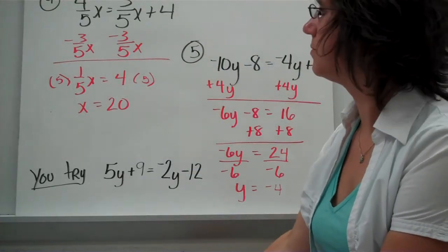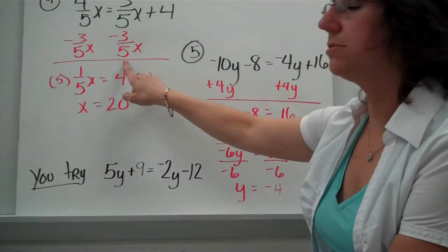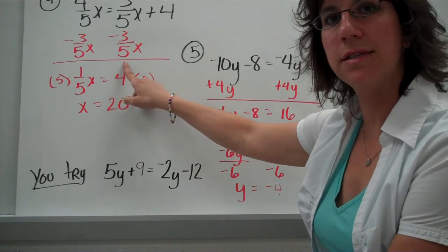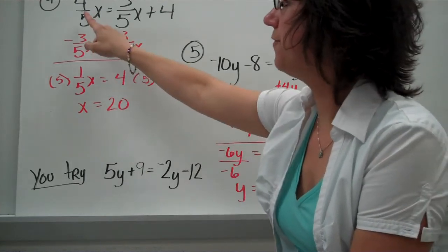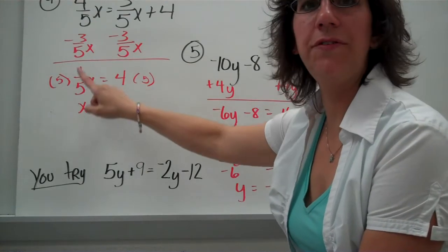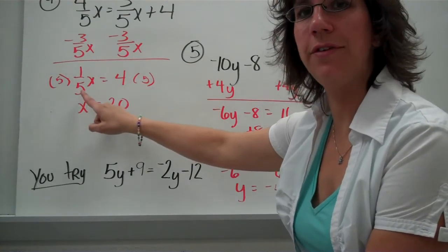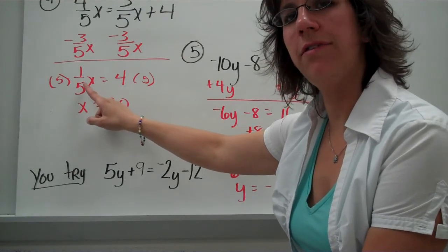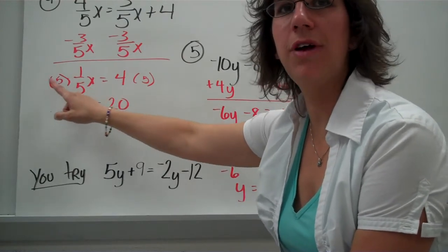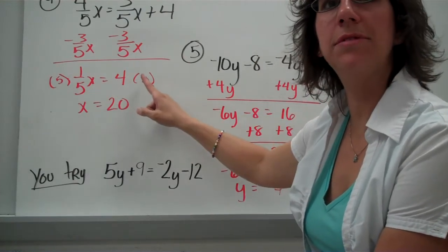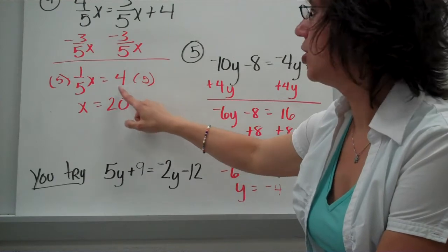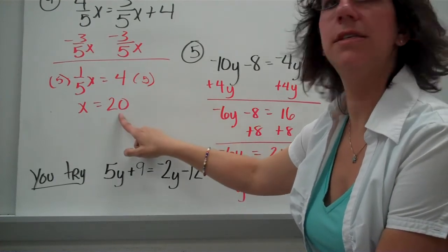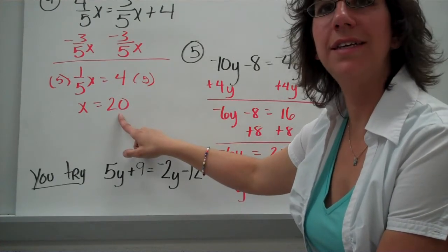Let's see how you did. Did you subtract 3/5ths from both sides? 4/5ths minus 3/5ths is 1/5th. Now, what's the opposite of dividing by 5? That's right — multiplying by 5. So 4 times 5 is 20.